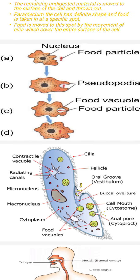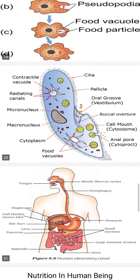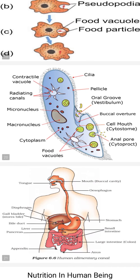In the amoeba diagram we see the nucleus, food particle, pseudopodia, and food vacuole. Next diagram we will see is paramecium. In this we see the contractile vacuole, cilia, pellicle, radiating canals, and micronucleus.